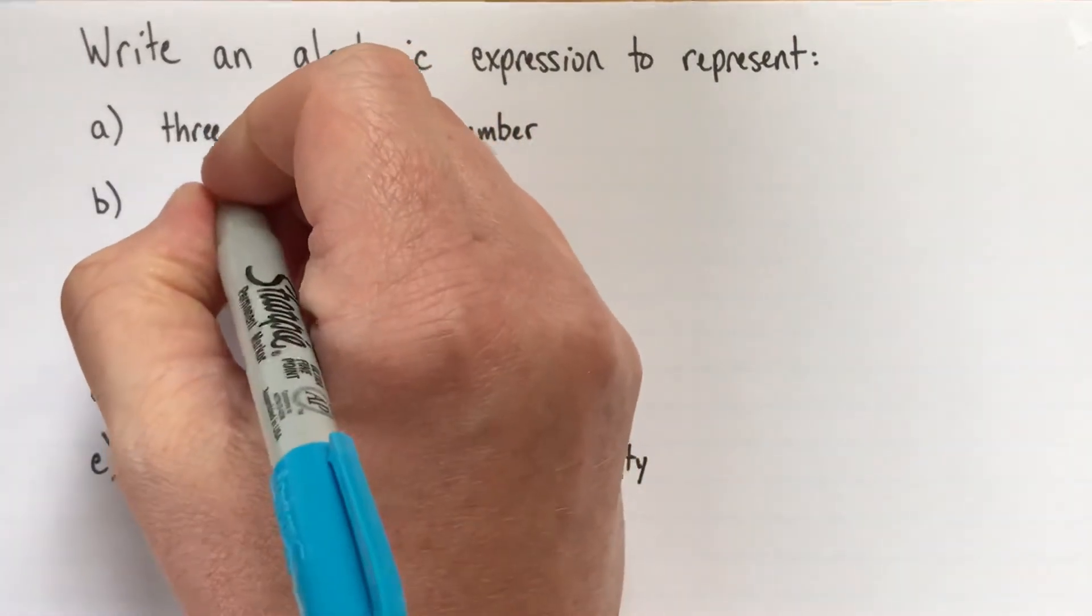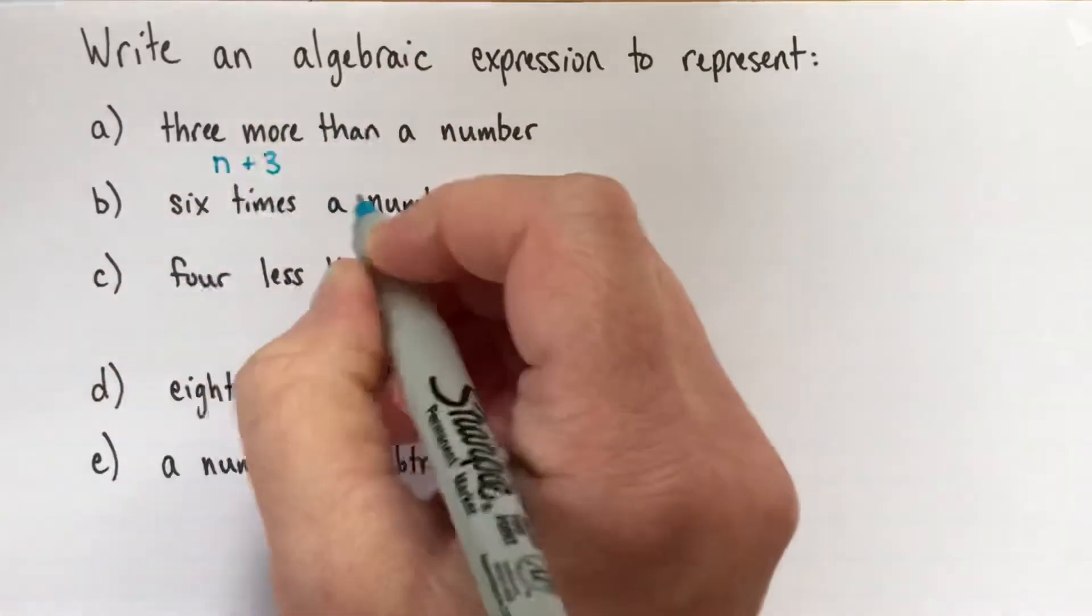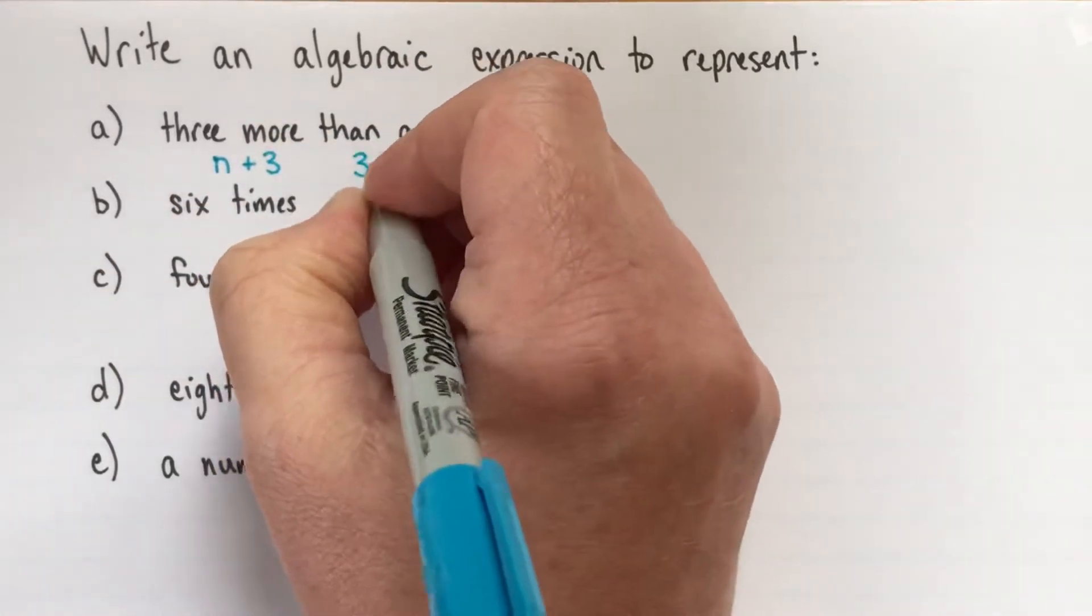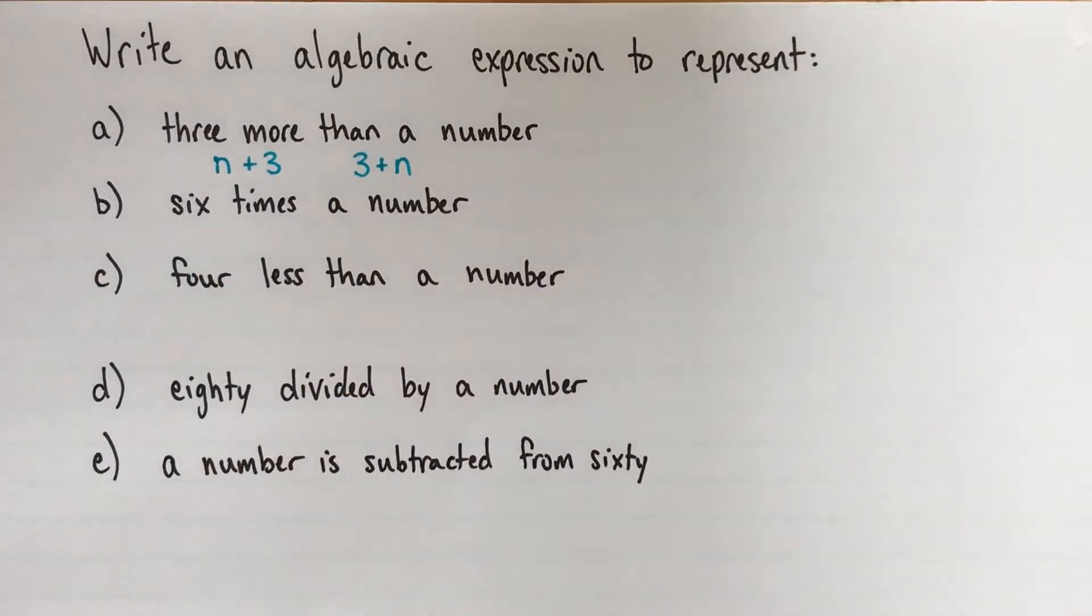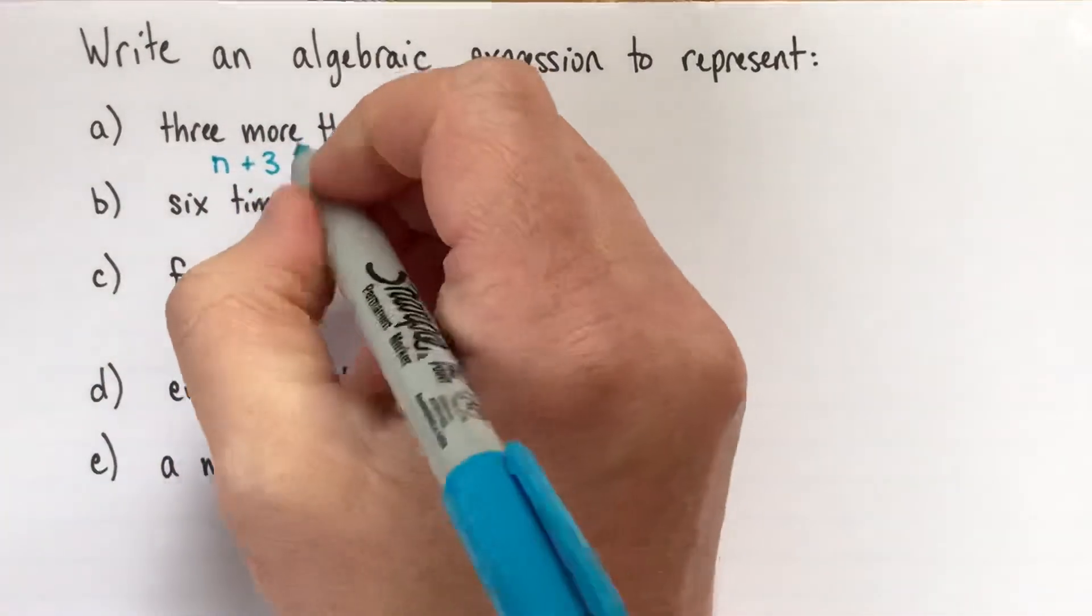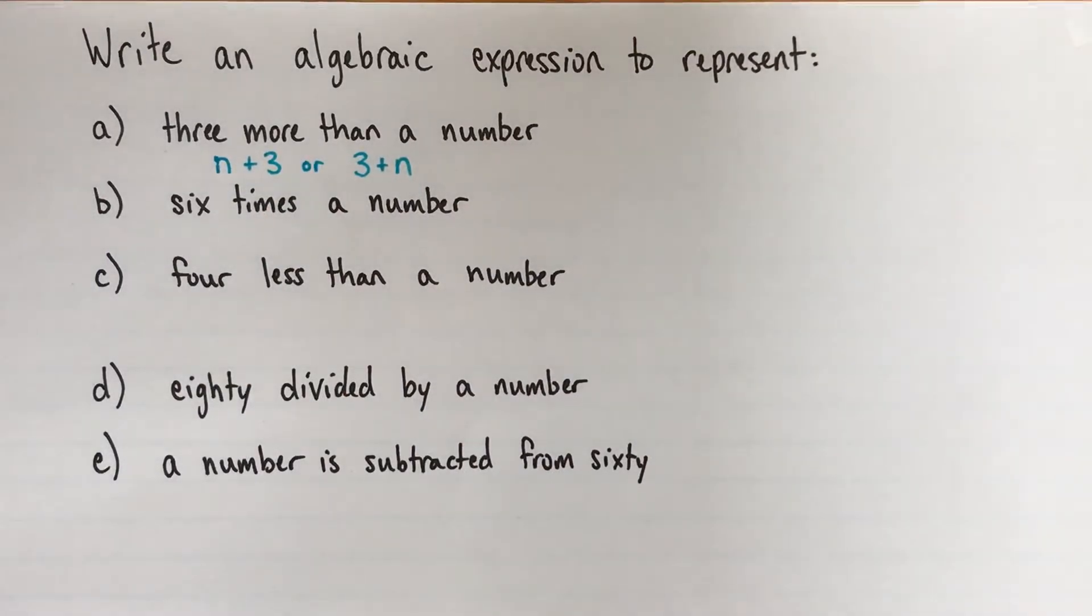We could have n plus three. And you could also have three plus n. Some teachers would prefer one or the other, but I think in my mind those are exactly the same. Either one is totally fine. Three more than the number n.